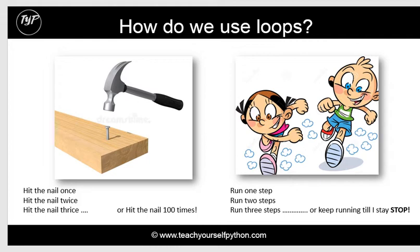Or if you knew the amount of times that you want the nail to be hit, just say hit it a thousand times and then stop, or start hitting it and then stop at a hundred, once you've reached a hundred times. And this is very similar to how a for loop works.